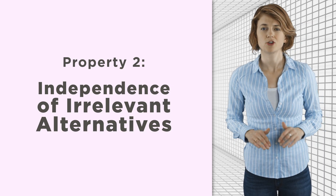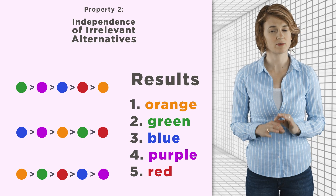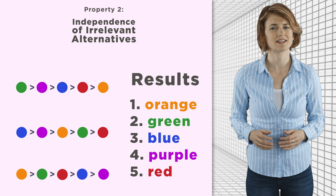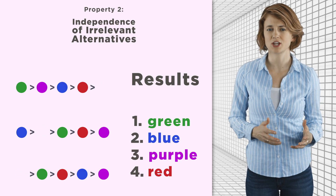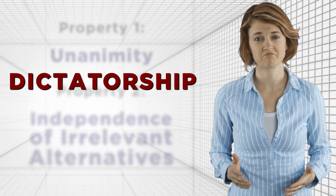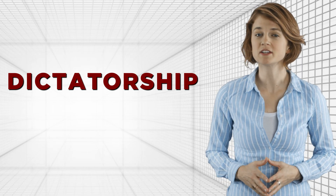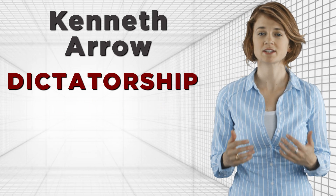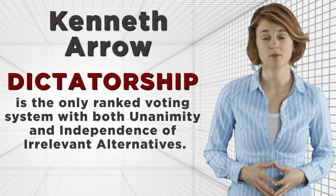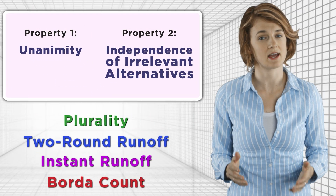Altering the ranking of color C shouldn't alter the relative positions of color A and color B. For example, if voter two changes their mind and decides they hate purple, that shouldn't change the fact that green is ranked higher than red. Or if orange drops out of the race, that shouldn't change anyone else's relative ranking. Here's an unpopular suggestion for a voting system with both desired properties: dictatorship. If the outcome of the election is determined by a single individual's vote—the dictator—then both properties are satisfied. Economist Kenneth Arrow proved that a dictatorship is the only rank voting system with both unanimity and independence of irrelevant alternatives. In particular, none of the four voting systems we looked at satisfy these two properties.